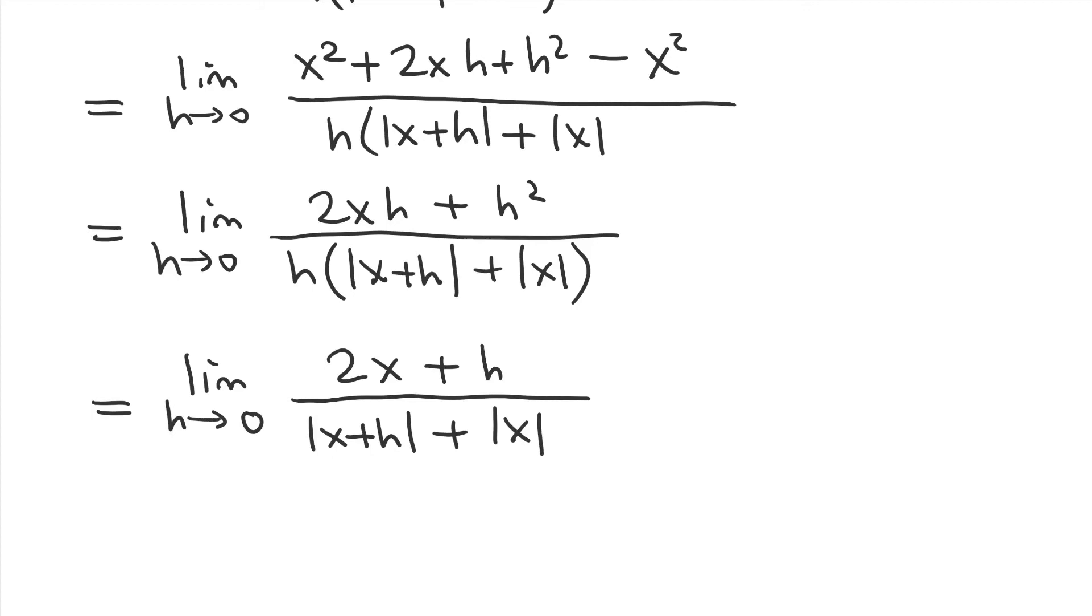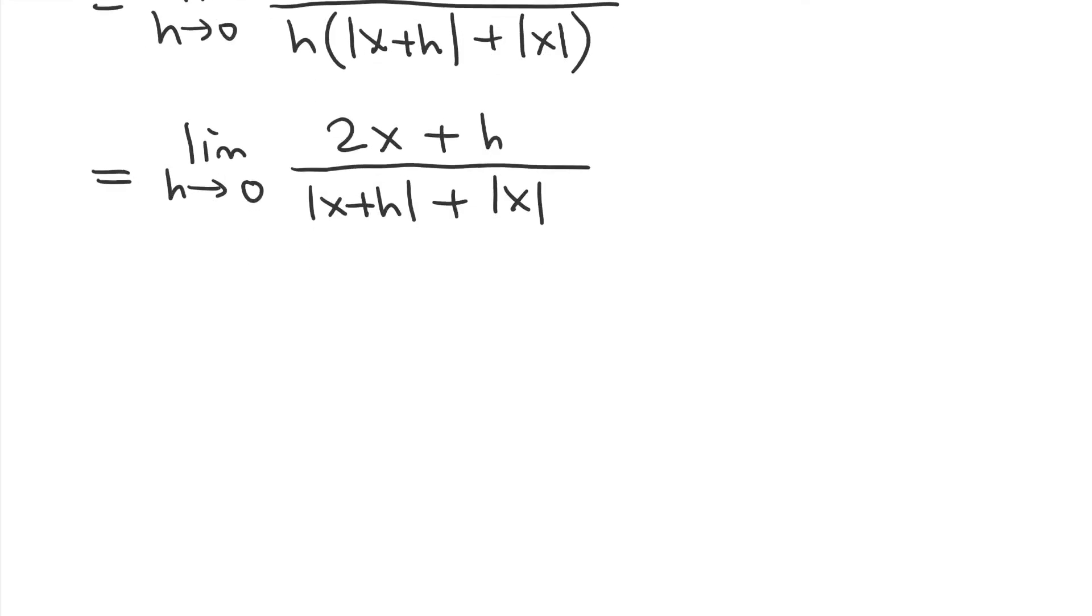And we won't end up dividing by 0 or anything like that. So, here we go. Plugging in h equals 0 in the numerator, we get 2x. The denominator, you can see in our first expression, we'll get absolute value of x because h is 0. In the second expression, again, we get absolute value of x. And so, this gives us 2x over 2 absolute value of x, which is equal to x over absolute value of x, which is the derivative of the absolute value function.